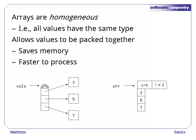Unlike Python lists, NumPy arrays are homogenous, i.e. all values must have exactly the same type. This allows values to be packed together, as shown here, which saves memory and is much faster to process.